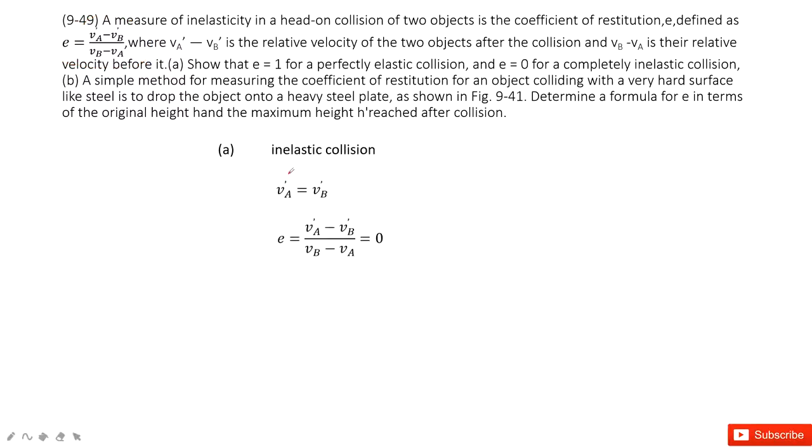Now look at the inelastic collisions. For inelastic collisions, object A hits object B and sticks together. When these two objects stick together, it is called inelastic collision. Because they stick together, they get the same final velocity: v_A' equals v_B'. So very easily, you can find this e just equals 0.